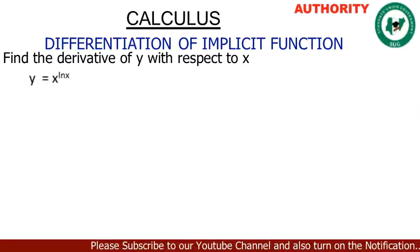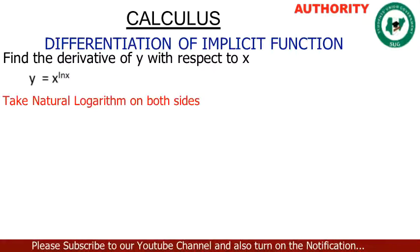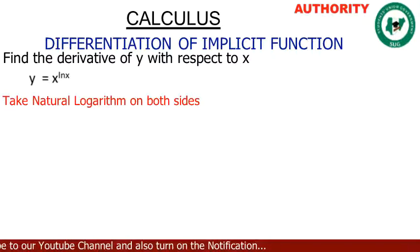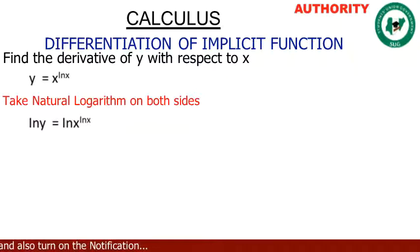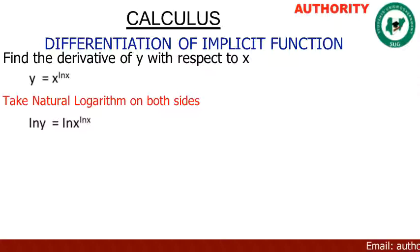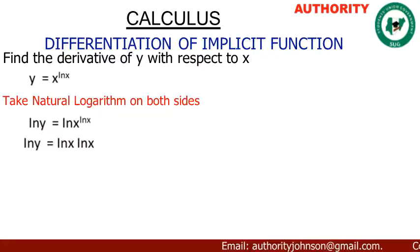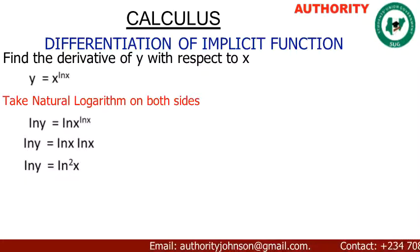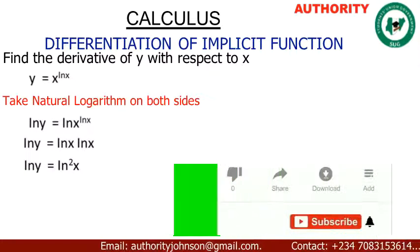We're going to take the natural logarithm on both sides, so we have ln y = ln(x raised to power ln x). We bring down the exponent in front of ln, so we get ln y = ln x · ln x, which means ln y = ln²x.